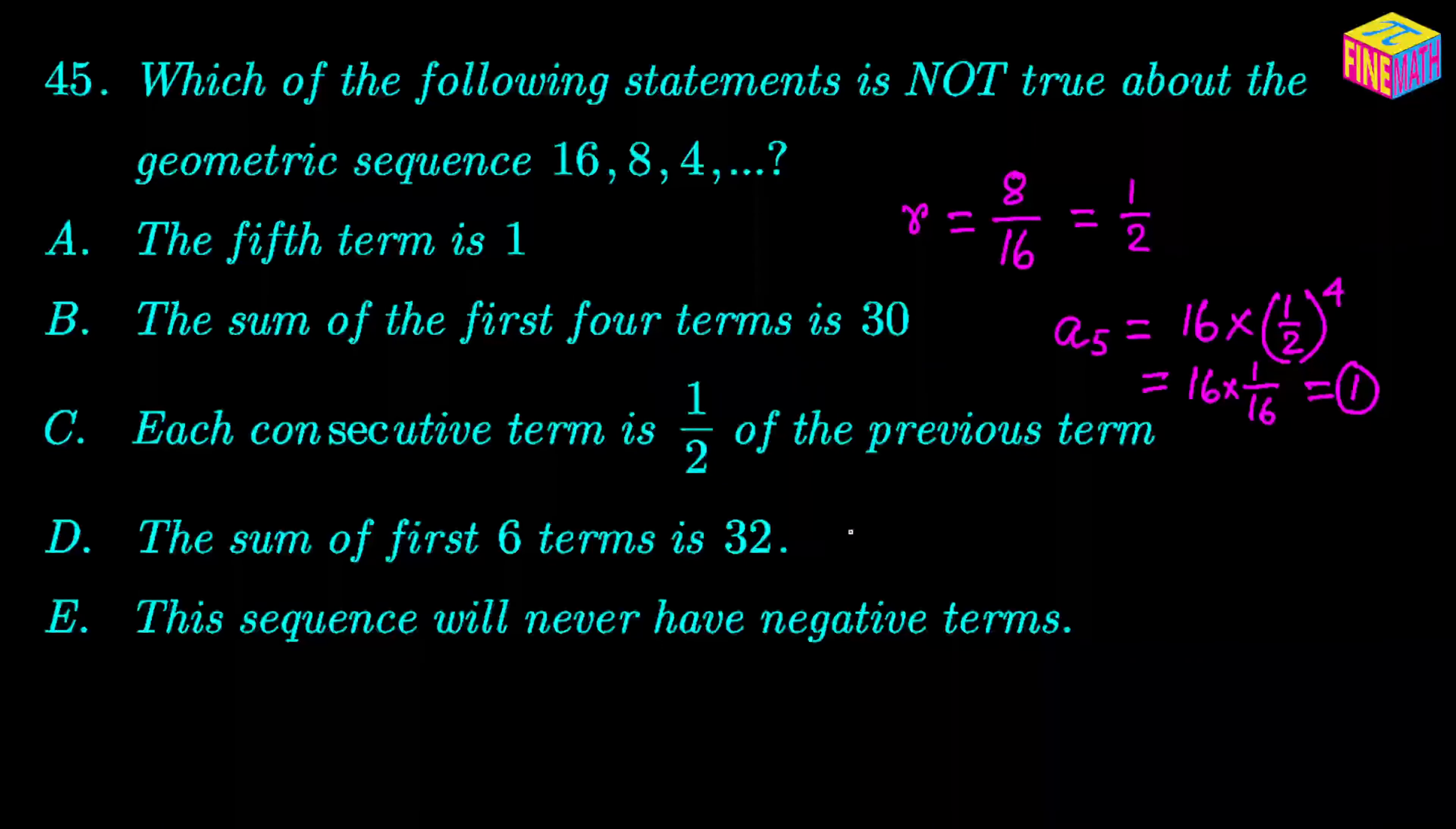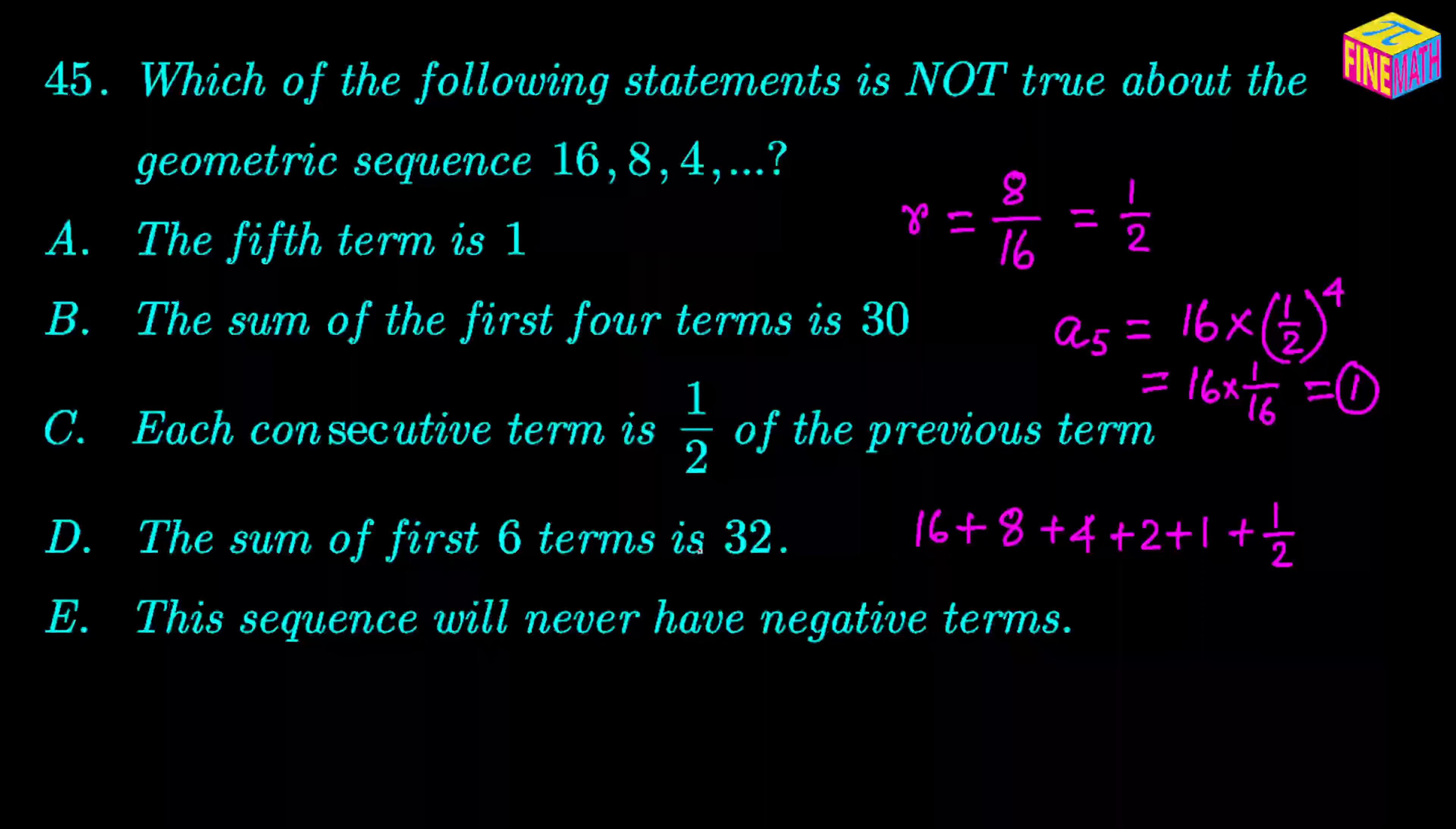Now let's look at the fourth statement. It says that the sum of the first six terms is 32. Well, let's take a quick look. We have 16 as the first term, then 8 as the second term, then 4 as the third term, then 2, then 1, and then one half. So if we add up the six terms here, what do we get? Well, we get 31 plus half, so that is 31 and a half. That's not 32. So this is the statement which is not accurate or not true for this particular geometric sequence. So option D is the correct option.